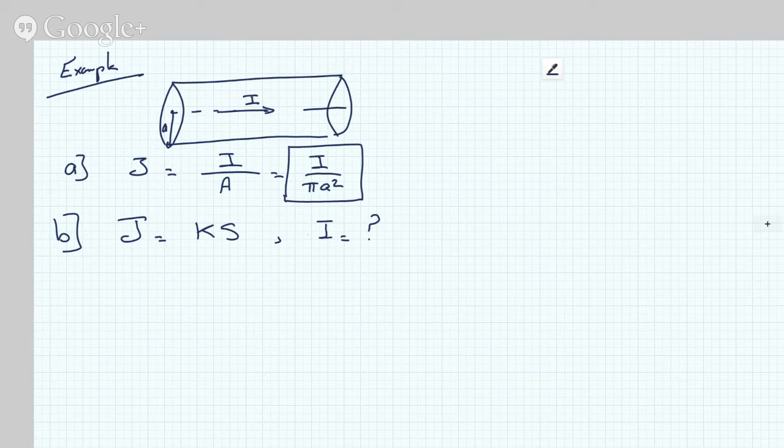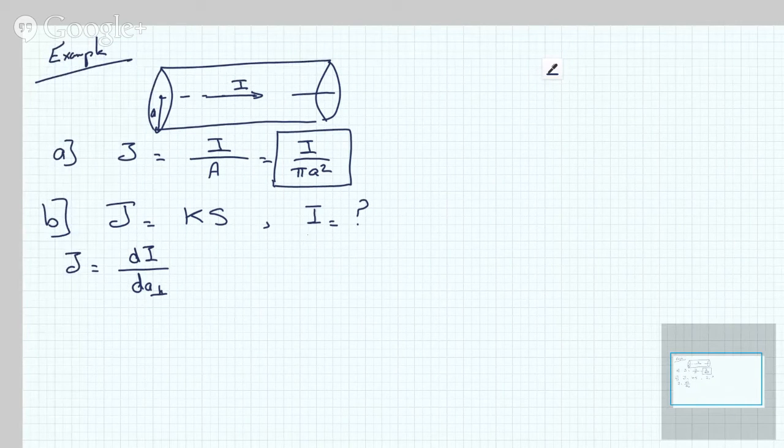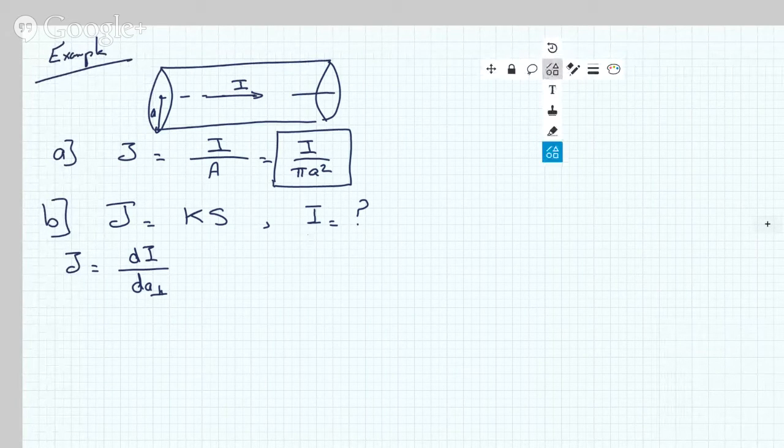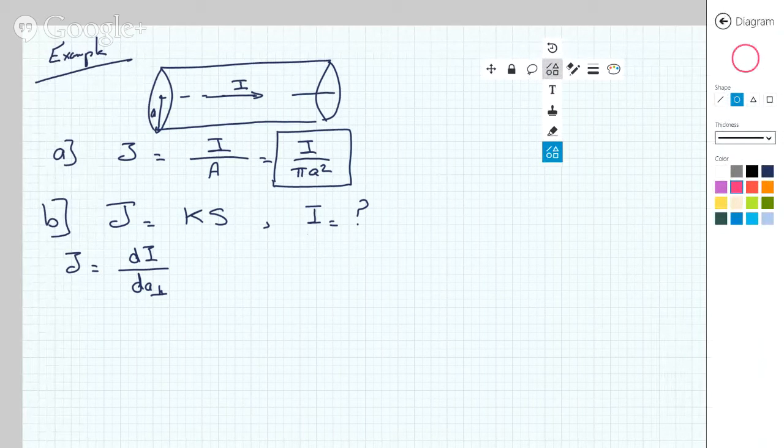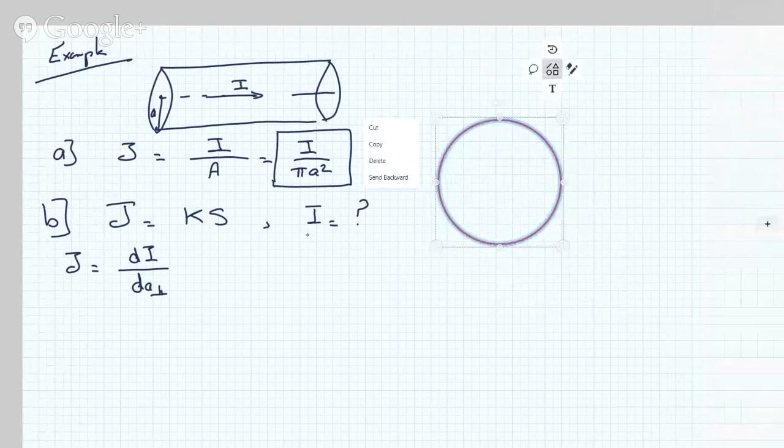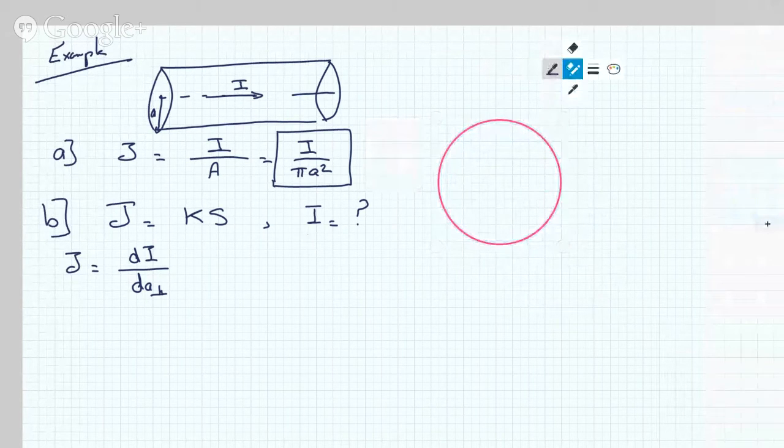In this case, we do have to integrate. We know that J is equal to dI over dA perpendicular. What this dA perpendicular means is that we have to take the cross-sectional area that is perpendicular to the flow of the current I. If I were to show you here how this will work out, if I were to take this circular cross-section of the wire...